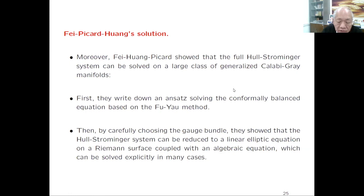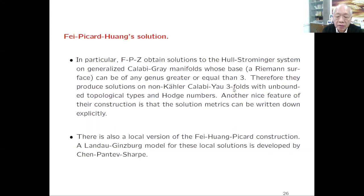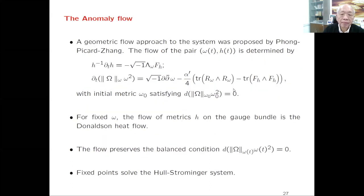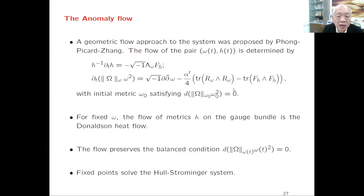Previously, the elliptic fiber bundle over K3 was locally trivial, and the elliptic curve didn't vary. But my former student Tan Faye identified that this construction can be pulled back with the Twistor family of the hyperkähler manifold using holomorphic maps from a Riemann surface into P^1, from theta characteristics. This observation allows a generalization of the Calabi-Gray construction showing there is a natural balanced metric on all such manifolds. Later, Fong, Wong, and Picard showed that the full Strominger system can be solved on this large class of generalized Calabi-Gray manifolds.